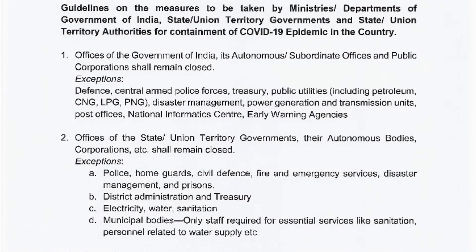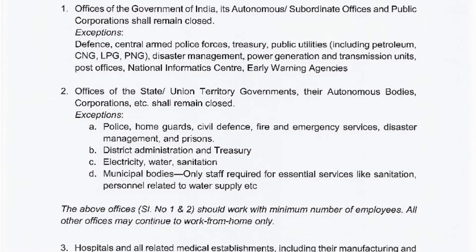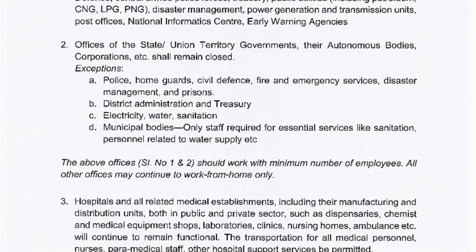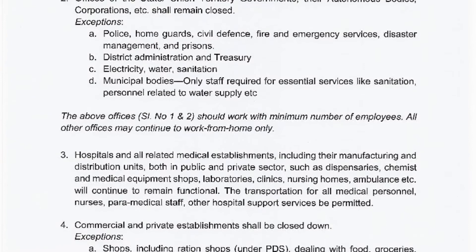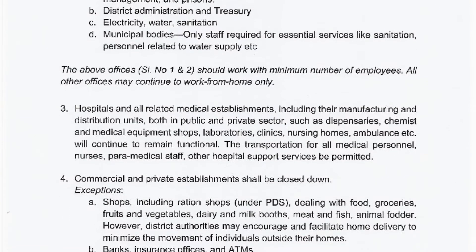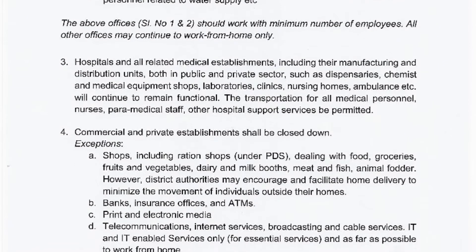Coming back to our point — on 24th March, the central government issued a notification saying there will be a lockdown. If you read that notification, it says that employers will treat employees on duty and leave will not be adjusted. Besides that, it was a notification under Section 10(2) of the National Disaster Management Act, which is a special act that supersedes all other legal provisions. But that notification does not say that it has suspended the Payment of Wages Act or any other act, nor does it say that employees will not be entitled to salary. So the status quo — the existing law — remains unless specifically dealt with by the notification.